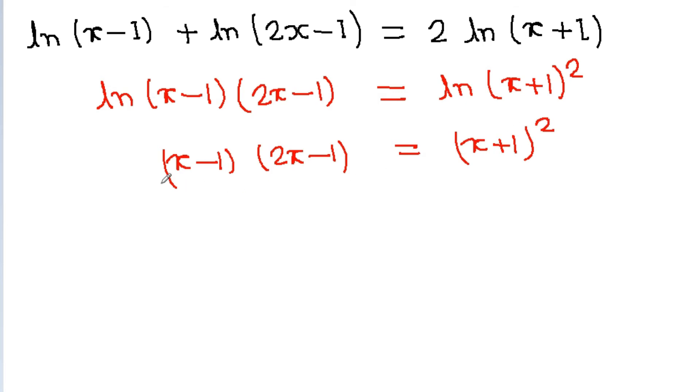If we simplify this, it will become 2x² - x - 2x, which becomes -3x + 1, is equal to x² + 2x + 1.